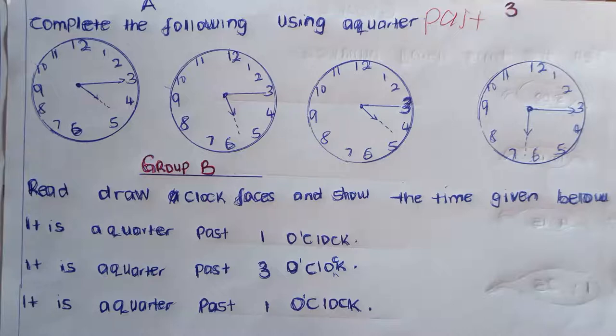Number three: the long one in twelve and the short one past four, and we say a quarter past four o'clock. Lastly, the long one in twelve and the short one past six — a quarter past six o'clock. Mark them well and give them marks. Thank you for helping me. I love that.